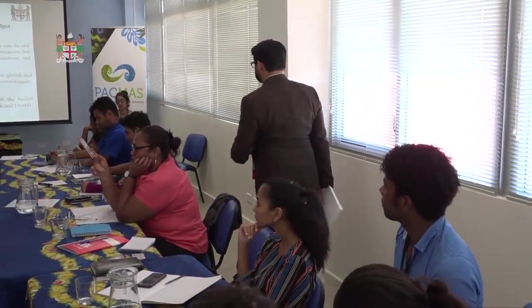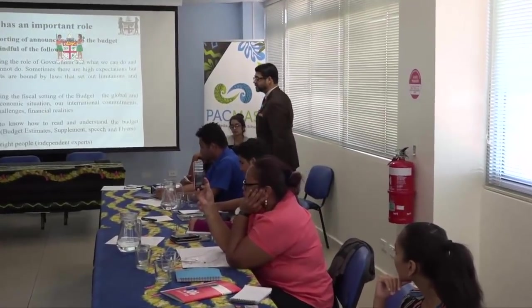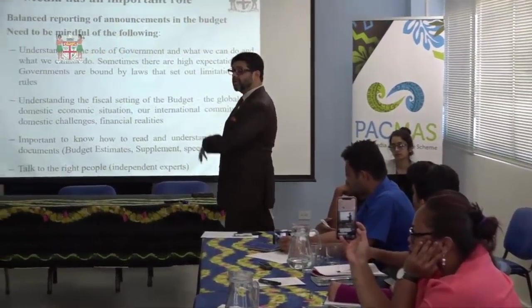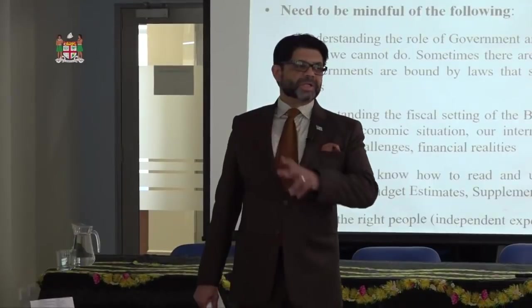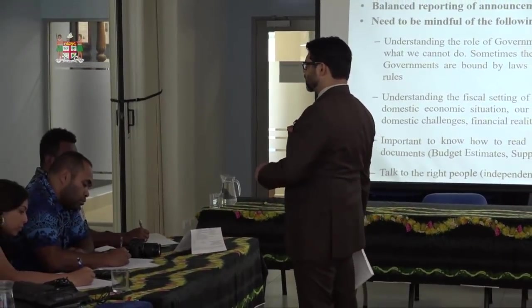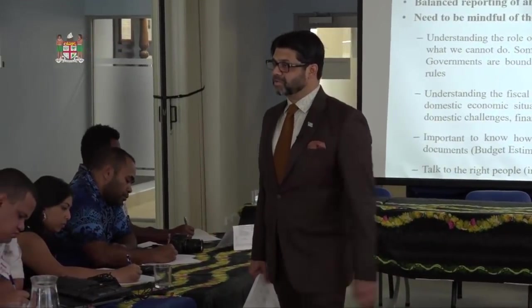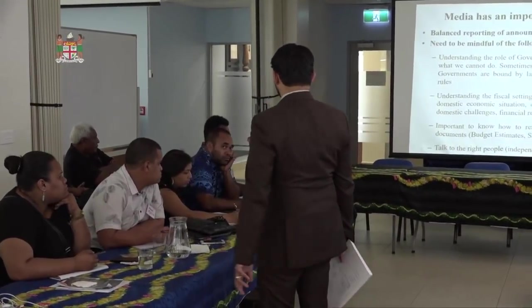Understand the fiscal setting of the budget. A lot of journalists don't take this into consideration — what is happening outside Fiji? The USA just slapped a 25% tariff on all Chinese goods entering the USA. China may retaliate, and a Huawei executive has been arrested. What are the implications of a possible trade war? What are the implications of a downturn in the Chinese economy on countries like Australia, where they source a lot of raw materials?